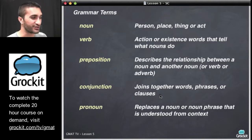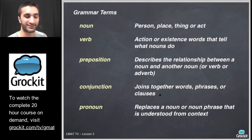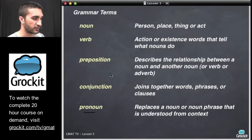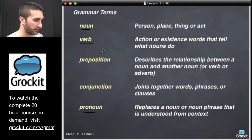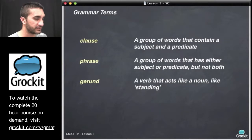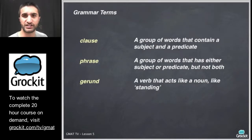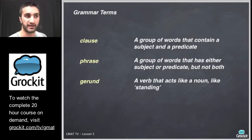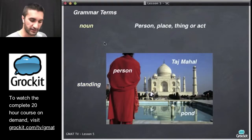Conjunctions join words, phrases, or clauses. Pronouns are a very popular issue on GMAT questions — pronouns and their antecedents, verb and noun agreement, and we're going to jump into a bit of that today. Clauses and phrases and gerunds, which are verbs that act like nouns, and we'll see some examples of these here.